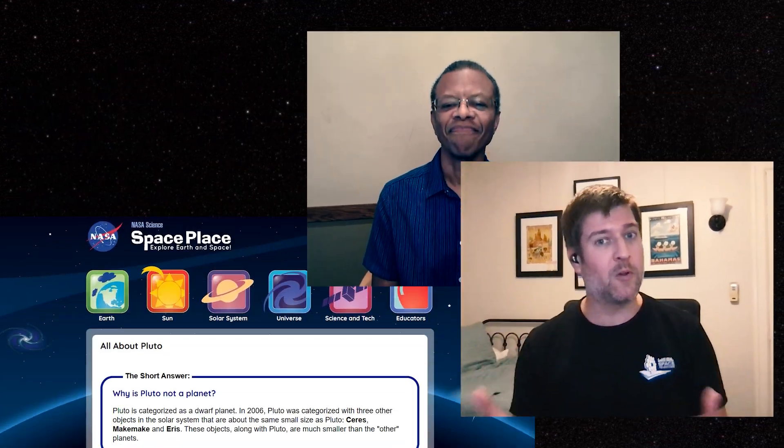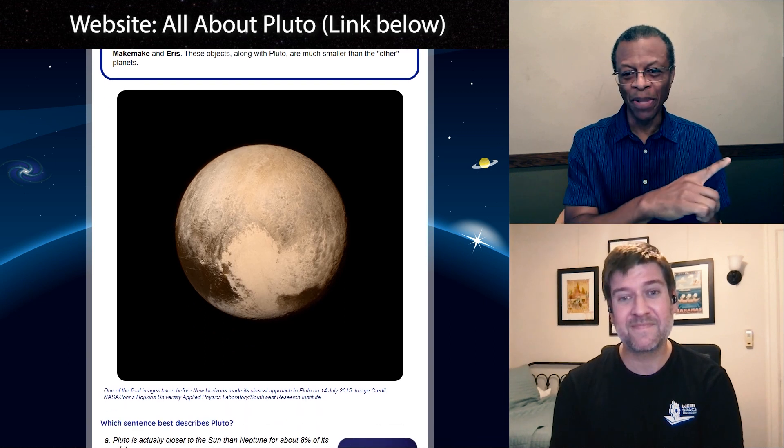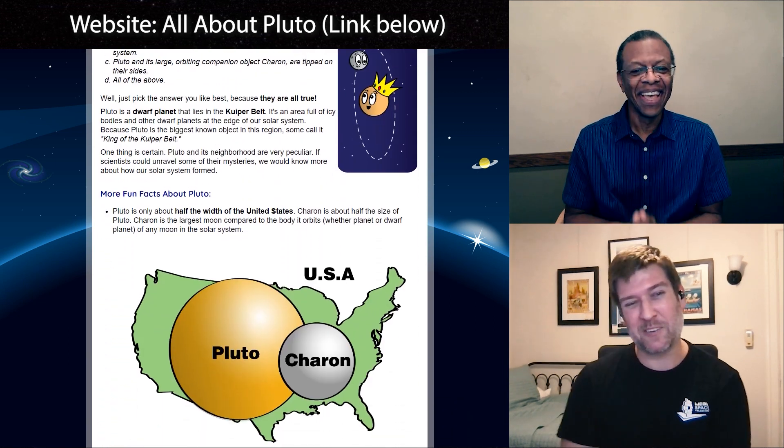So an exoplanet is any planet that's outside of the eight in our solar system, because as we all know Pluto is not a planet. Actually those are exoplanets. Pluto is an ex-planet. Exactly, slight differentiation there.